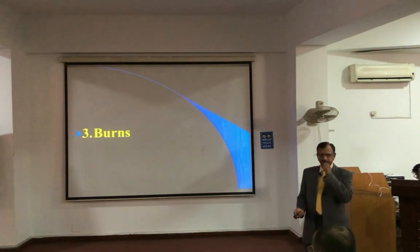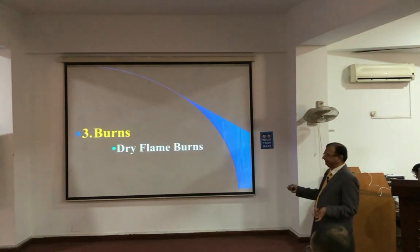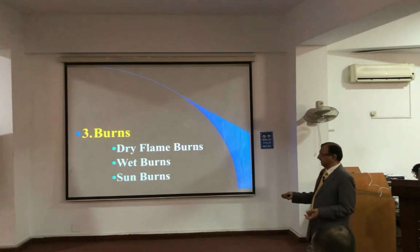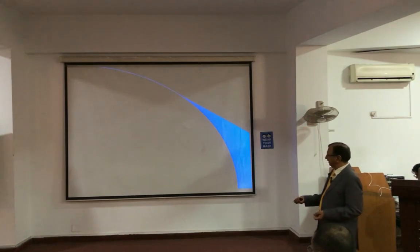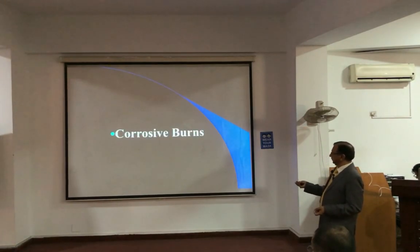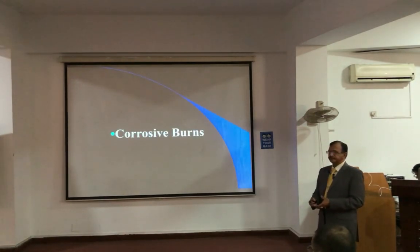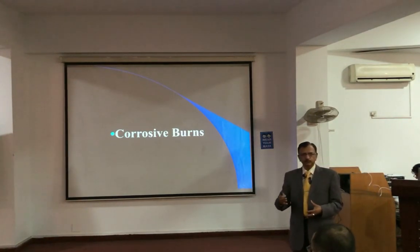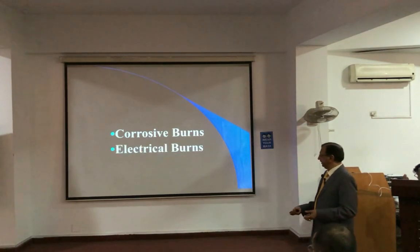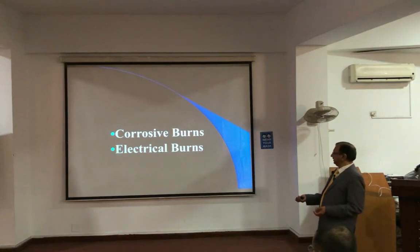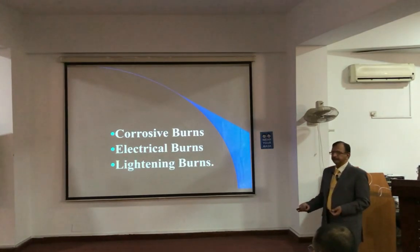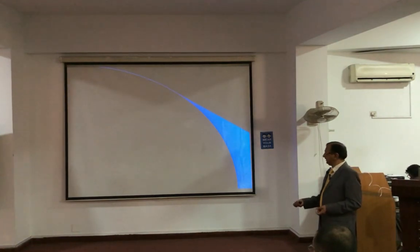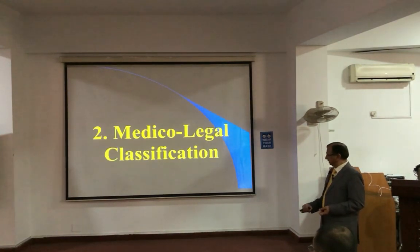Then the burns — burns can be dry flame burns, wet burns, or sunburns. Then corrosives: any corrosive acidic or alkaline substance corrodes the tissues. And there are electrical burns, lightning burns, X-ray burns — so these are all various types of burns.